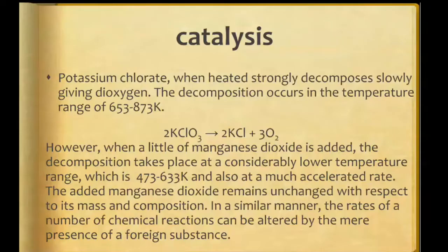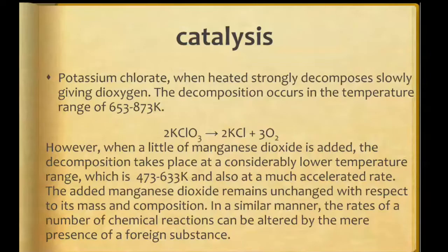For example, if we talk about potassium chlorate decomposition — this decomposition is slow, and even when heated strongly, the process remains very slow. On heating, oxygen gas is evolved and this decomposition occurs at 653 to 873 Kelvin. However, in the presence of manganese dioxide, the reaction takes place at 473 to 633 Kelvin and moreover the reaction speed increases.